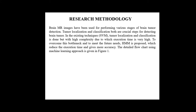In the research methodology, location and classification are both crucial steps for detecting tumor in the brain. In the existing technique, tumor location and classification is done but with high complexity, due to which execution time is very high. To overcome this bottleneck and meet future needs, HMM is proposed, which reduces execution time and gives more accuracy. The detailed flowchart is given in the next slide.